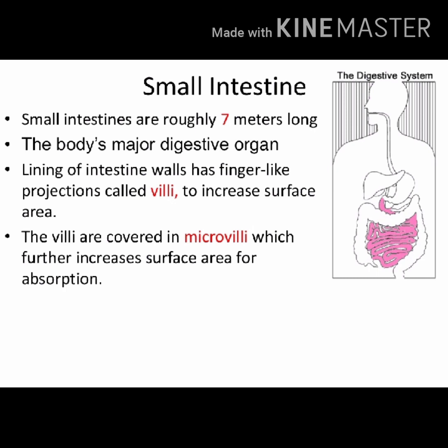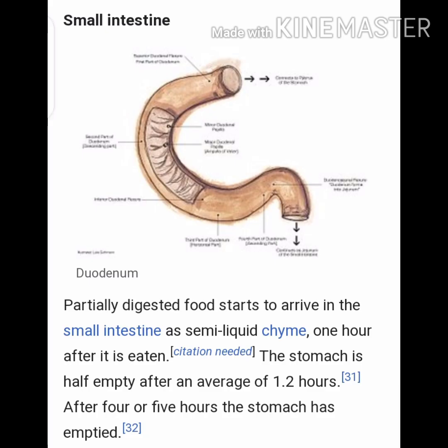The lining of the small intestine wall has finger-like projections called villi which increase the surface area. The villi are covered in microvilli which further increases the surface area for absorption. The pink color in this image indicates the whole small intestine — that seven meter length — where partially digested food arrives as semi-liquid chyme.